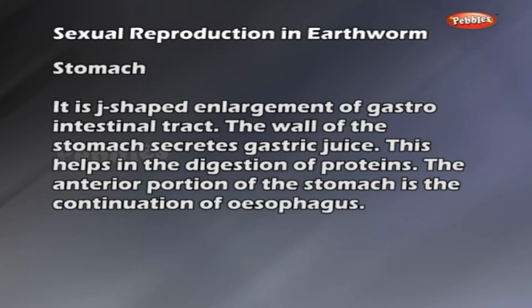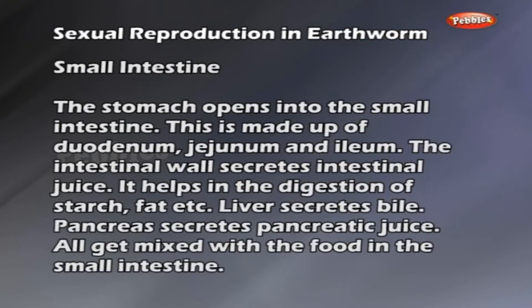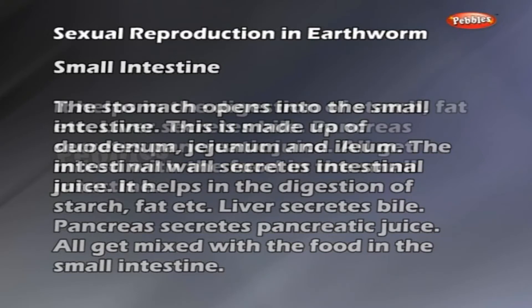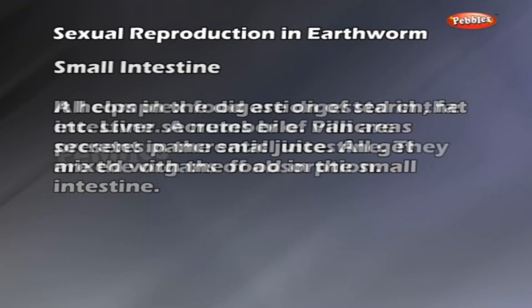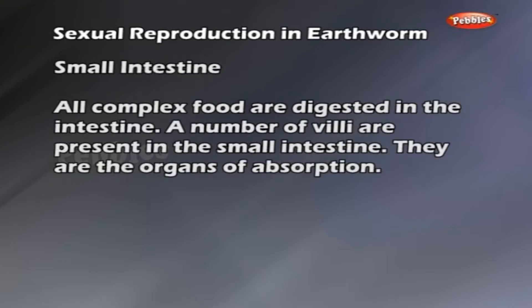The stomach opens into the small intestine, which is made up of the duodenum, jejunum and ileum. The intestinal wall secretes intestinal juice, which helps in the digestion of starch, fats, etc. The liver secretes bile and the pancreas secretes pancreatic juice, all of which mix with food in the small intestine. All complex food is digested in the intestine. Villi present in the small intestine are the organs of absorption.